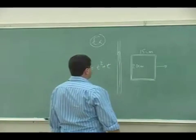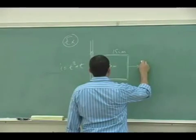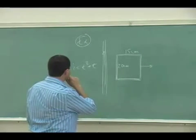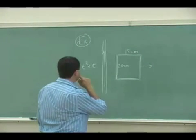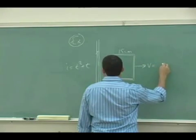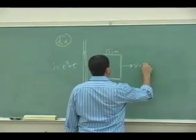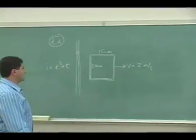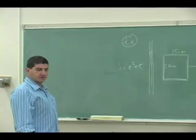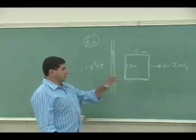I could say somebody is dragging this at a constant velocity. Let's say the velocity is to the right at two meters per second. So what that's going to do is this: there's a couple of things going on here.